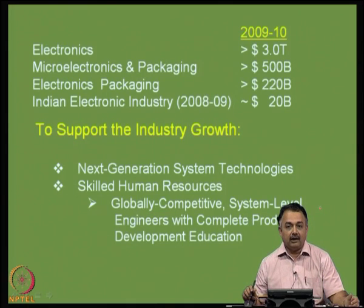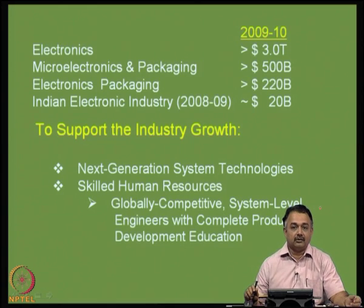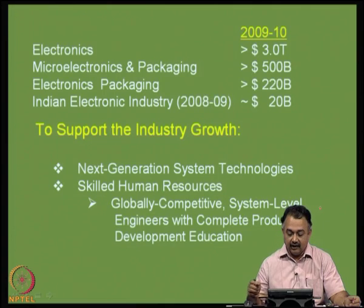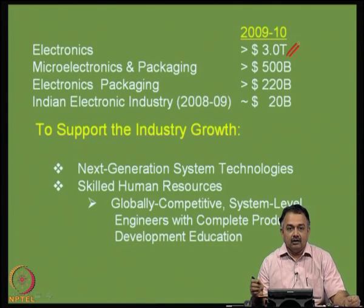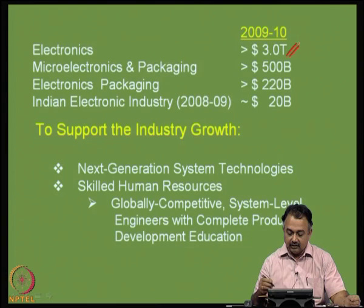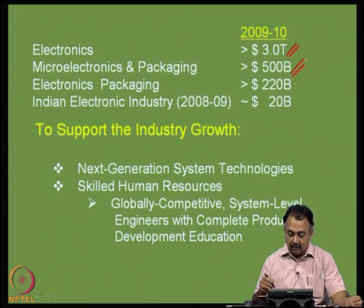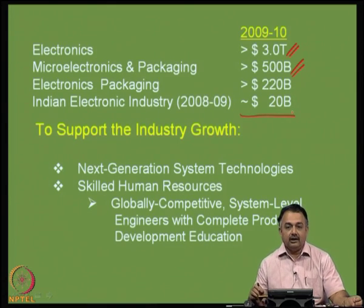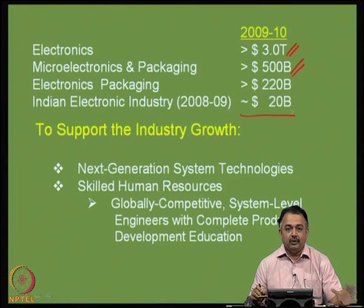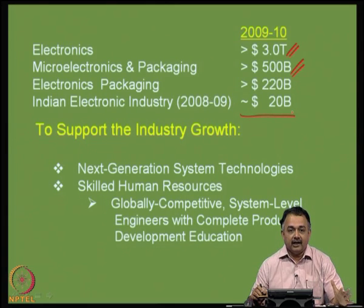If you look at the global market as of 2009–2010, the total electronics industry is greater than 3 trillion dollars. Microelectronics and packaging in that part of the electronics industry is about 500 billion dollars, and electronics packaging is about 220 billion dollars. In comparison, the Indian electronics industry is only around 20 to 25 billion dollars — so you get a feeling of where we stand globally.